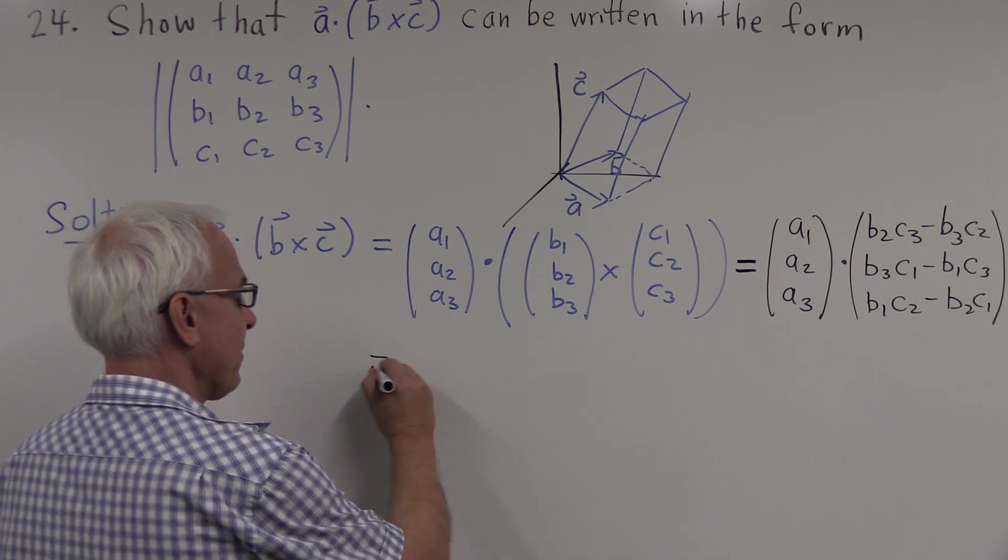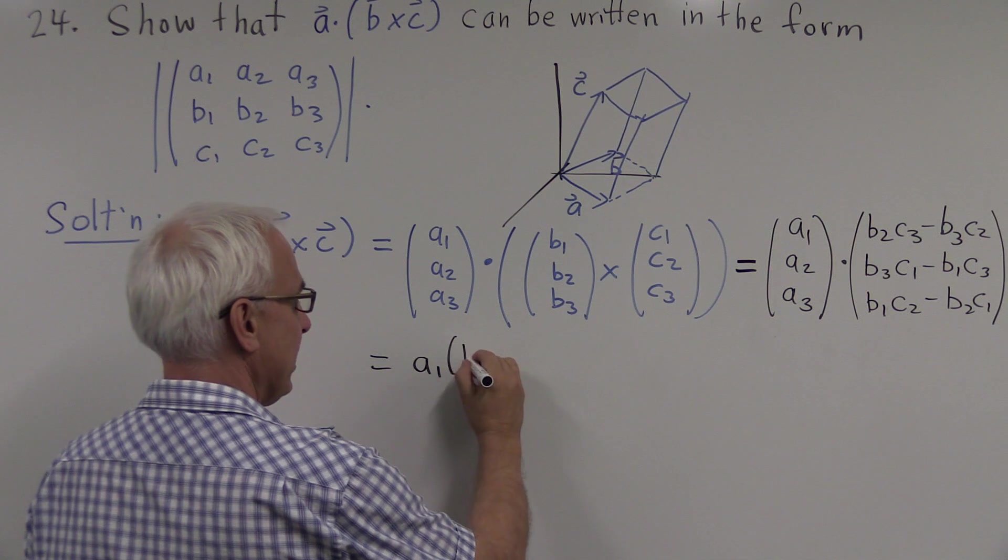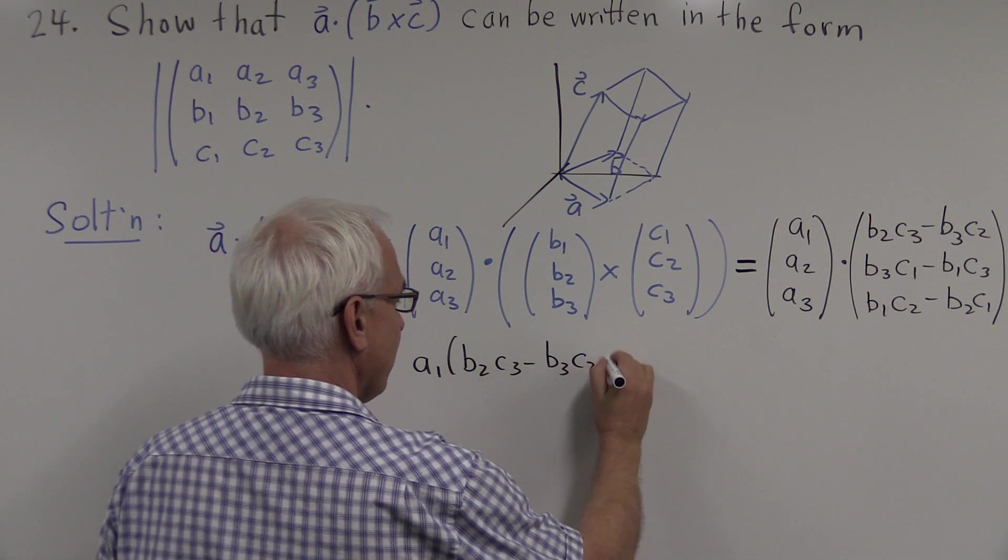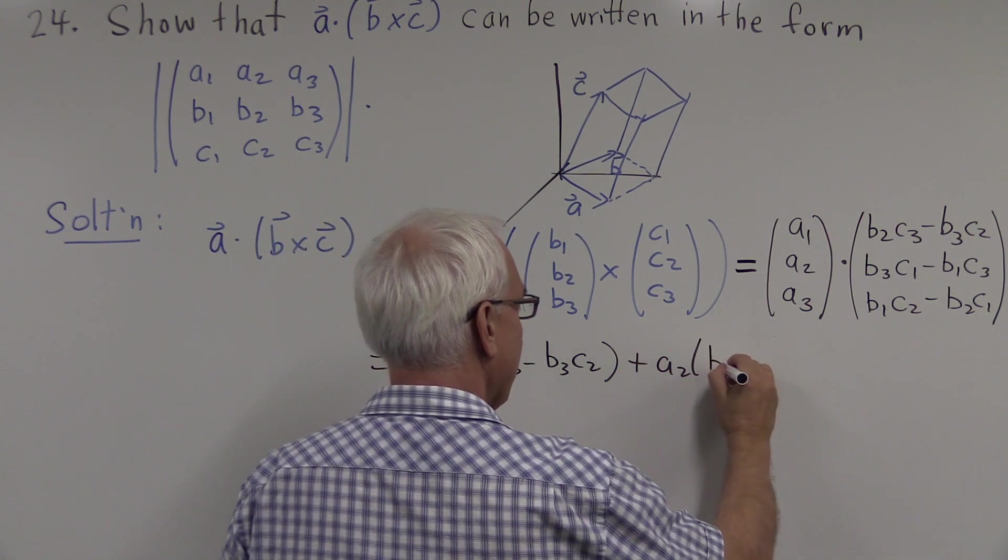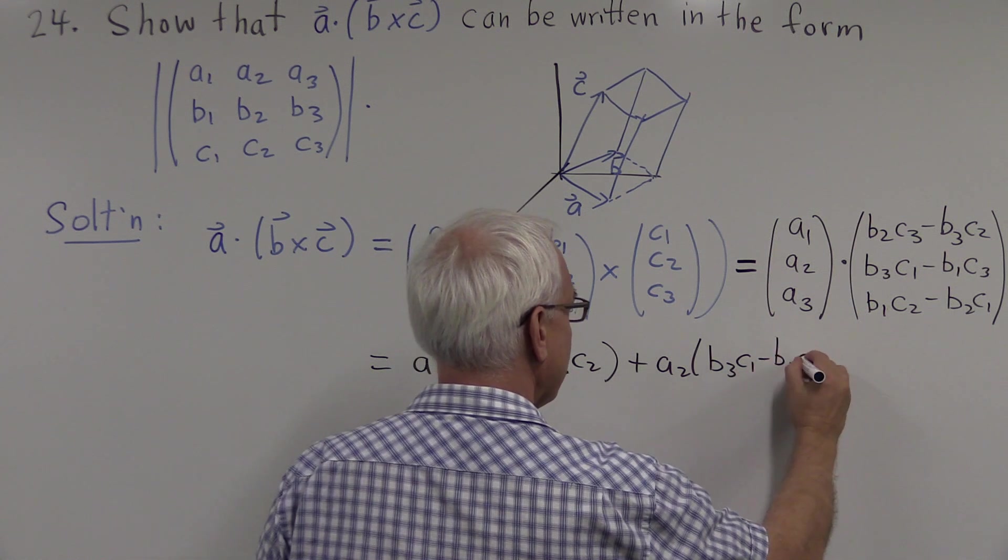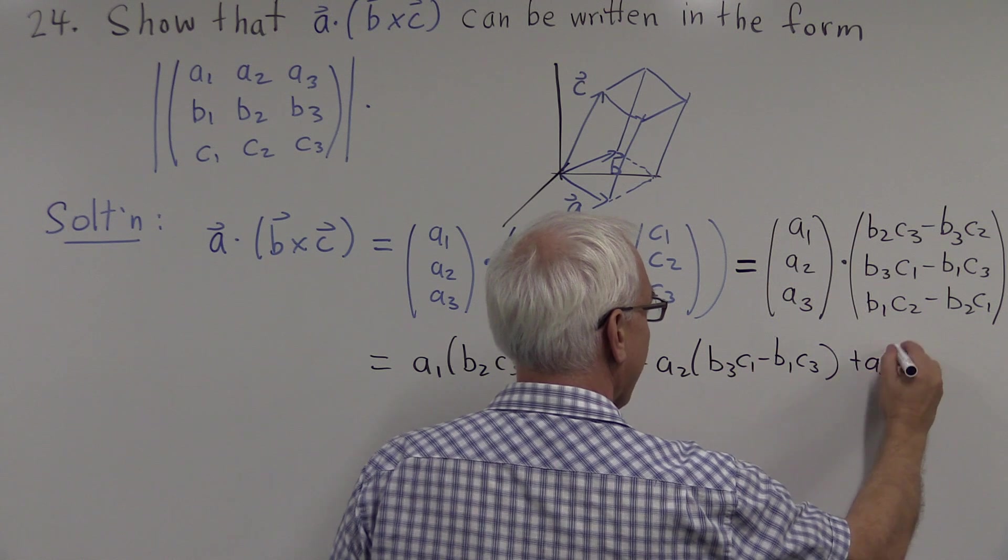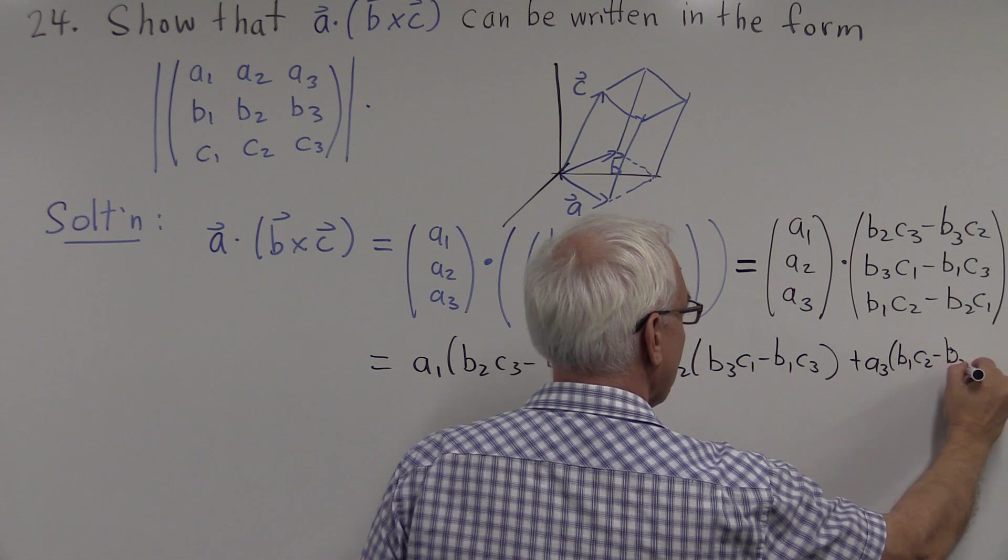Okay, now how do we find that dot product? Well, it's a1 times b2 c3 minus b3 c2, plus a2 times b3 c1 minus b1 c3, plus a3 times b1 c2 minus b2 c1.